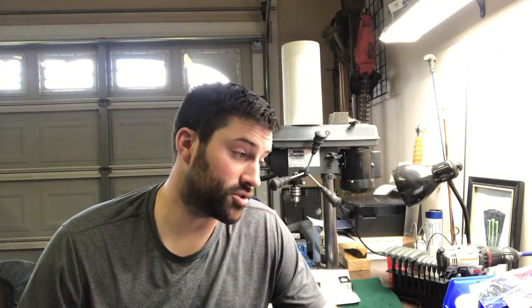Back in the day they started with 1-in-12 twist. The picture shows circles that encompass the best range of bullet weights a given twist rate will accommodate. The numbers — 1-in-7, 1-in-8, 1-in-9, 1-in-12 — mean that in that many inches of barrel, the bullet rotates one full time. So 1-in-12 means one rotation per 12 inches; 1-in-7 means one rotation per 7 inches.